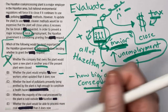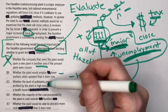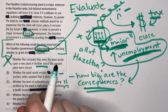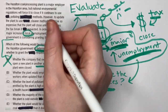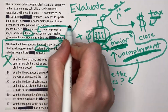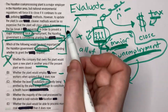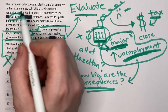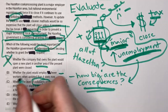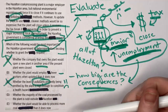Answer choice C asks whether the level of pollutants presently being emitted is high enough to constitute a health hazard. This is a classic wrong answer trap for evaluate questions — you're here to evaluate the conclusion, not the evidence. Focusing on pollutants is way too much focus on the evidence and doesn't address unemployment, which is the crux of the argument. C is wrong.